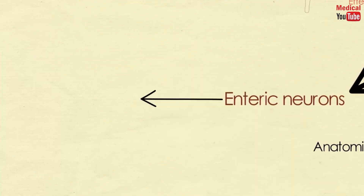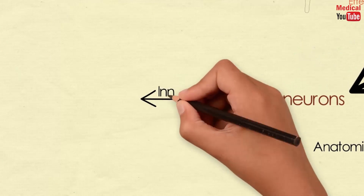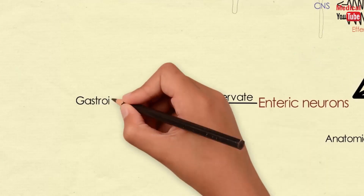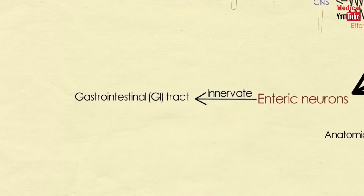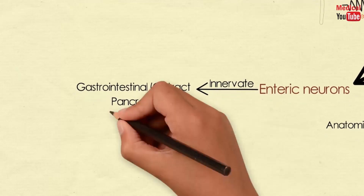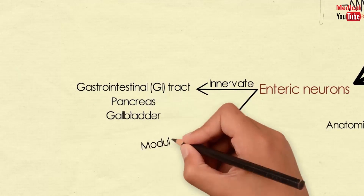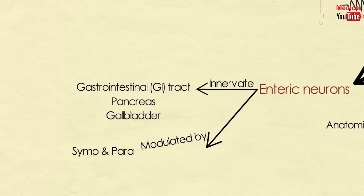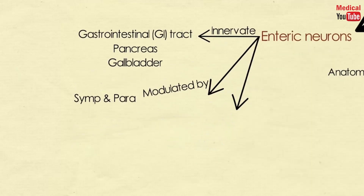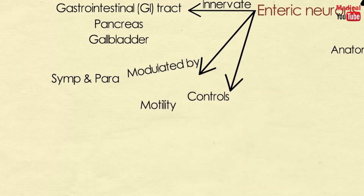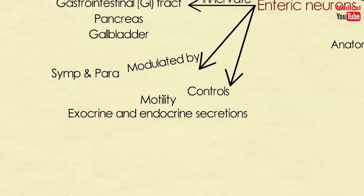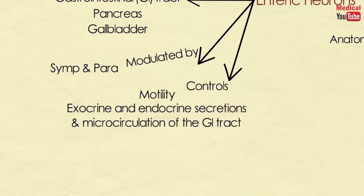We'll talk about that in detail in the upcoming lessons. The final division of the autonomic nervous system is the enteric neurons — a collection of nerve fibers that innervate the gastrointestinal tract, pancreas, and gallbladder. This system functions independently of the CNS. It is modulated by both the sympathetic and parasympathetic nervous systems, and it controls the motility, exocrine and endocrine secretions, and microcirculation of the GI tract.